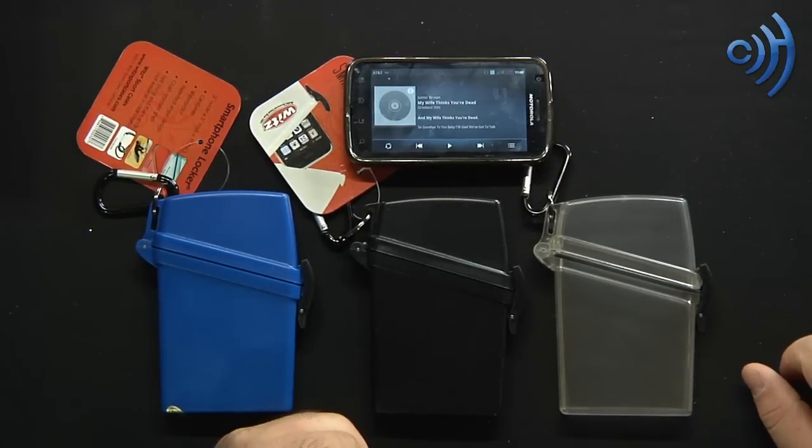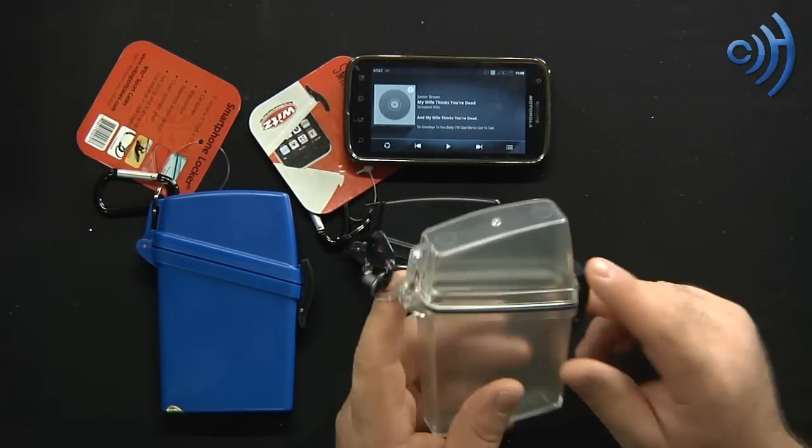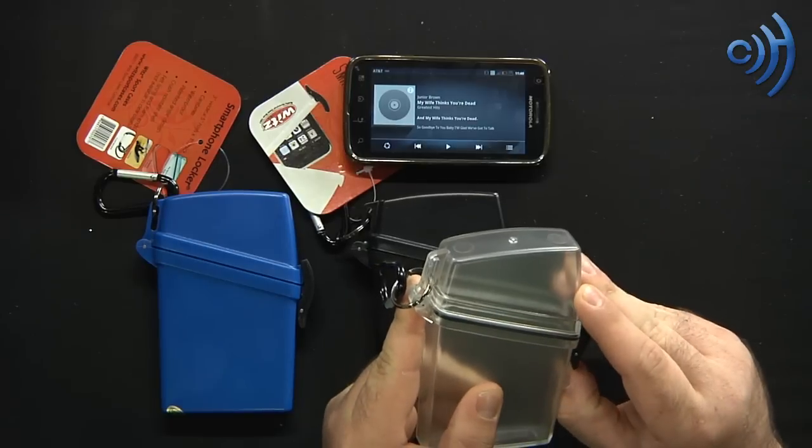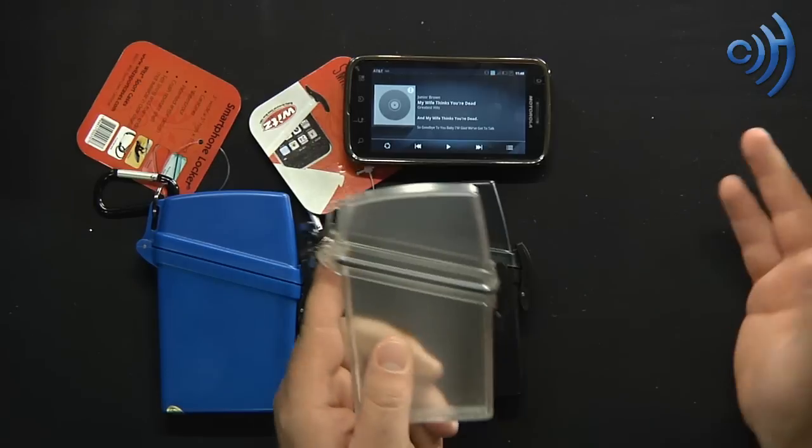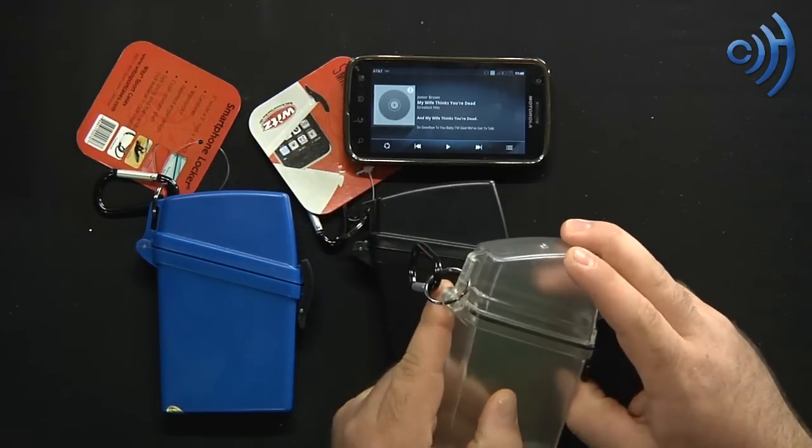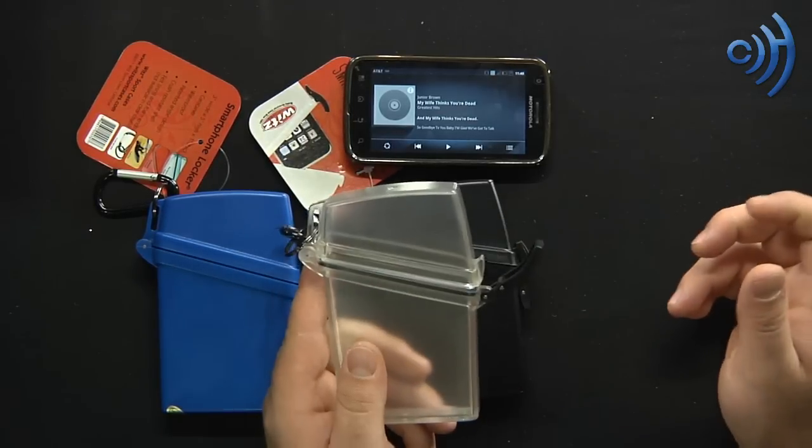And what is the Smartphone Locker? Well the Smartphone Locker is for the active outdoors adventurer, just average day person, maybe people who live in Seattle where it rains a lot, and they want to keep their stuff and or their Smartphones dry.